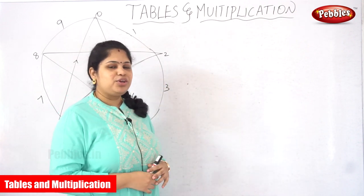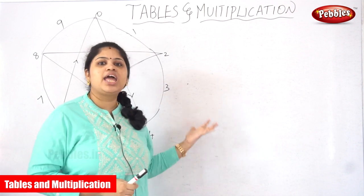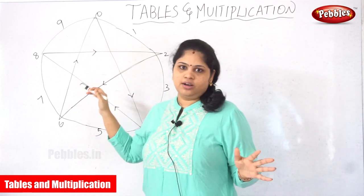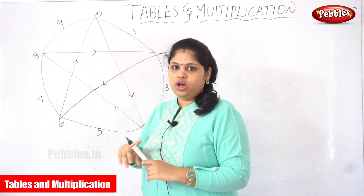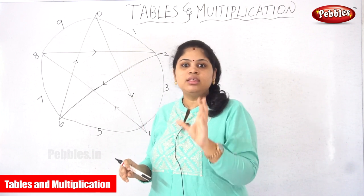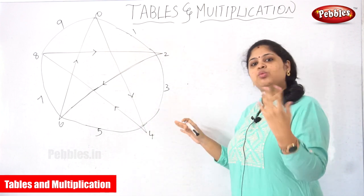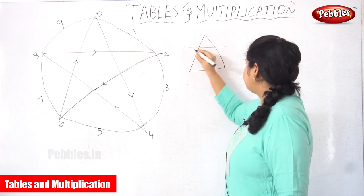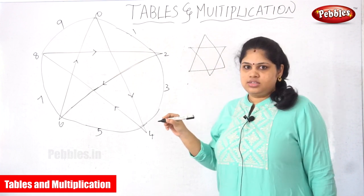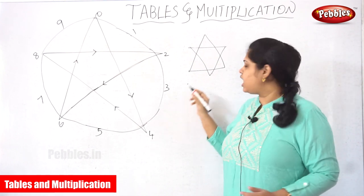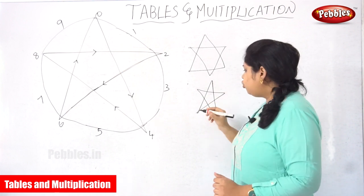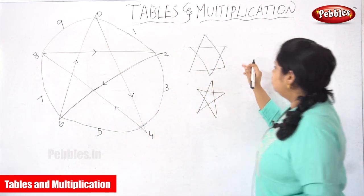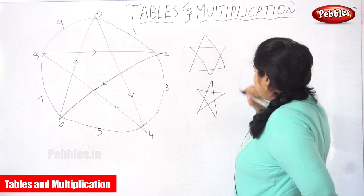Now we are going to see how this star helps us learn the fourth table. I have drawn a star here. Before going into the concept, I want to clarify one thing. When you go home to practice, small kids usually draw stars in the common way — but actually the star should be drawn in a specific pattern. Only if you draw it in this pattern will the star help you learn the fourth table.